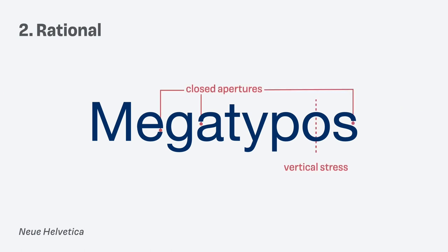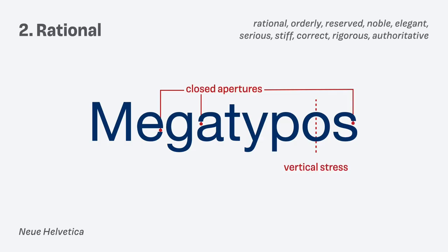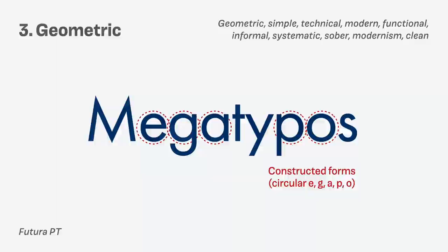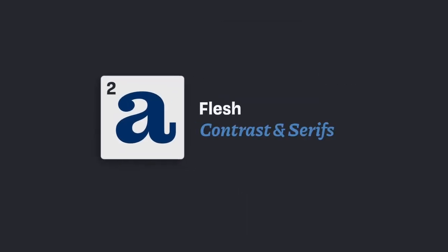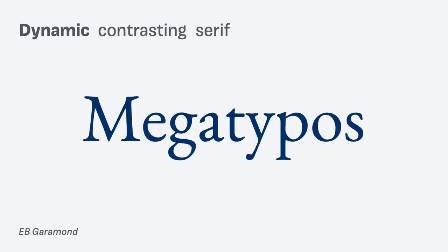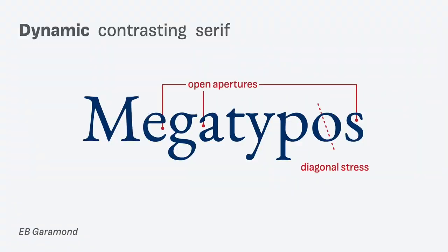The rational form model — look at the E or the A — has closed shapes, creating a rational, orderly, reserved, or noble feeling. The geometric form model is very constructed and creates a clean, modern, and simple appearance. Moving on to the next layer: the flesh — contrast and serifs. When we add contrast and serifs to our dynamic sans serif, the open apertures and diagonal stress are still there. It still feels open and human-friendly, but now more traditionally serif in style — it changes the atmosphere, but not totally.